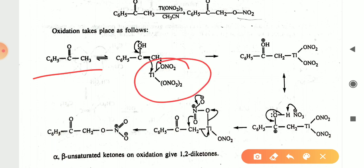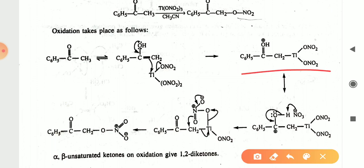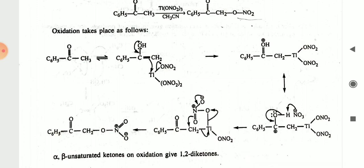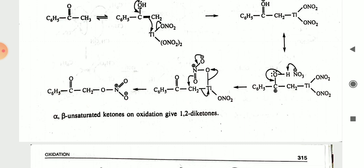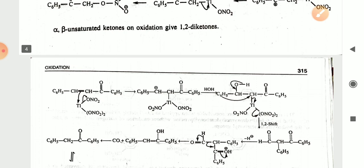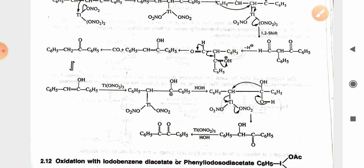The mechanism: the ketone combines with thallium nitrate; the O–H bond breaks, H combines with oxygen, and the double bond shifts toward the thallium nitrate, giving the intermediate C6H5–C(=OH+)–CH2–Tl(NO2)(ONO2). This intermediate further rearranges to give the final product: an alpha-beta unsaturated ketone, or on further oxidation, a 1,2-diketone.